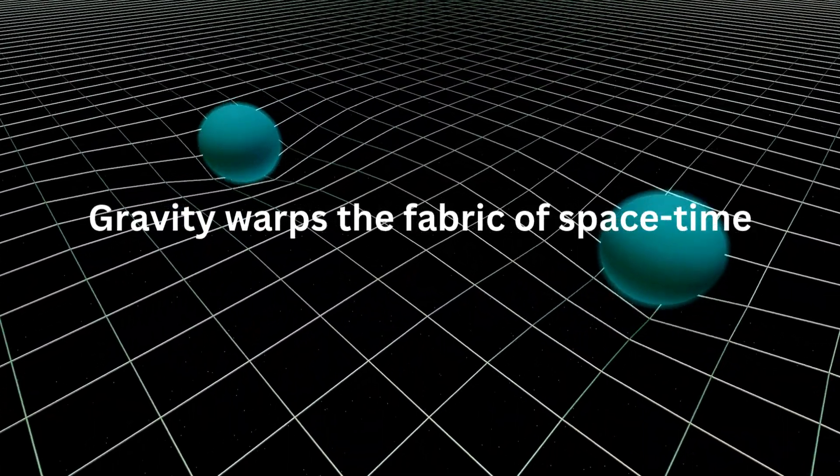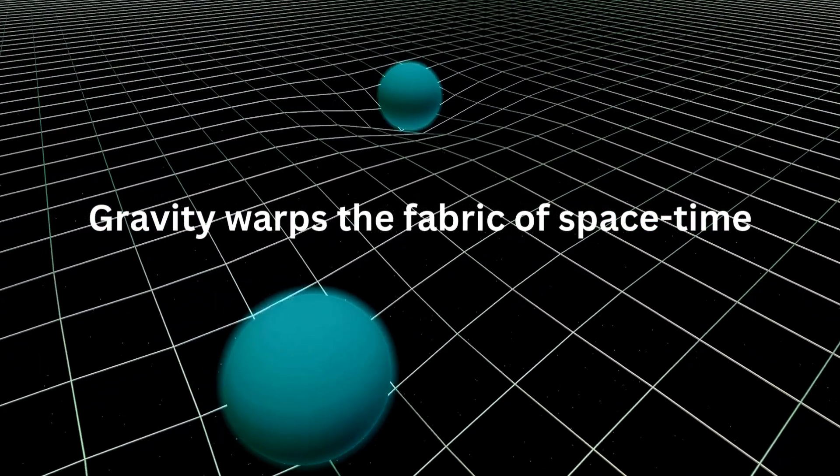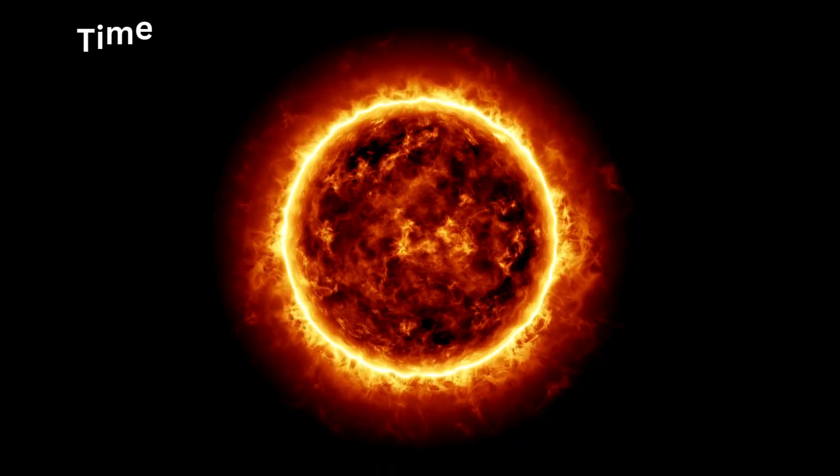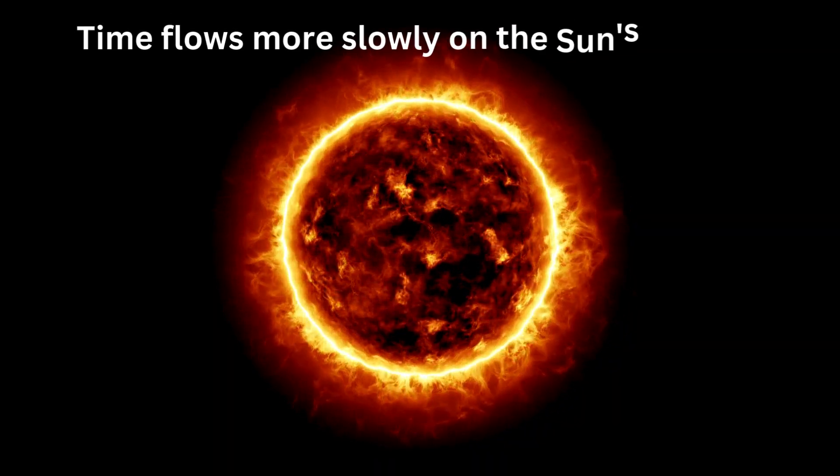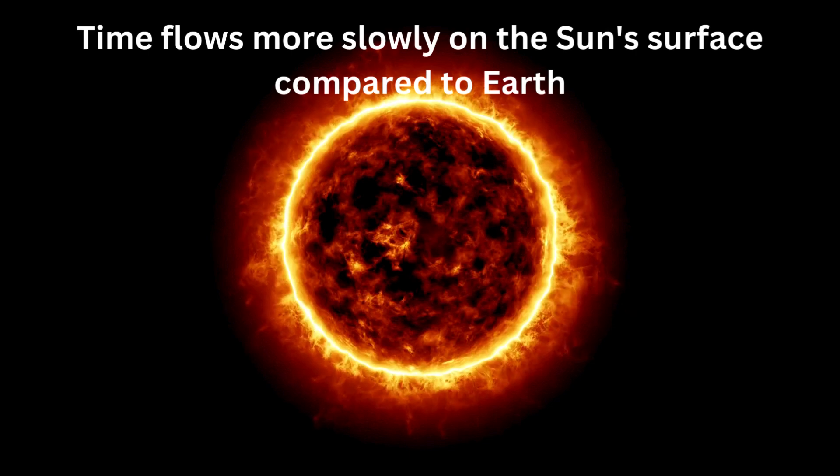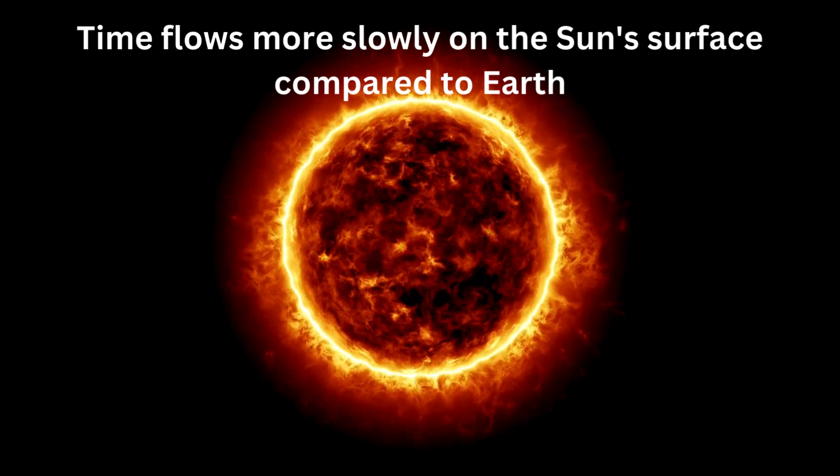Gravity warps the fabric of space-time. The stronger the gravitational field, the slower time flows. Since the sun has a much stronger gravitational field than Earth, time flows more slowly on the sun's surface compared to Earth.